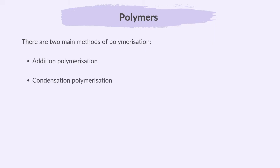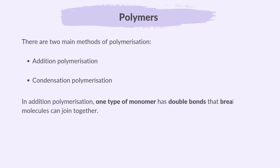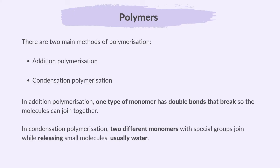In addition polymerization, one type of monomer has double bonds that break so the molecules can join together. In condensation polymerization, two different monomers with special groups join while releasing small molecules, usually water.